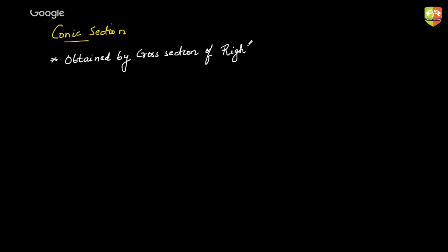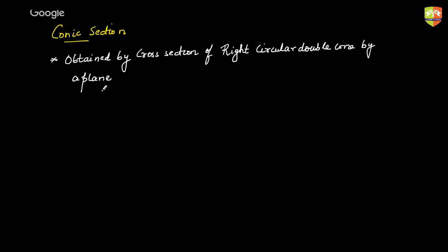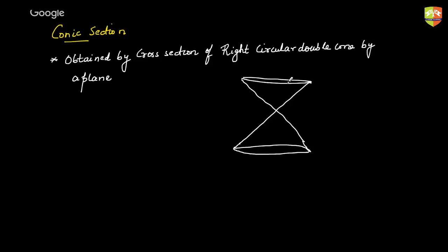Conic sections are obtained by the cross-section of a right circular double cone by a plane. Depending upon how this plane passes through the right circular double cone, different conic sections are generated. A right circular double cone is a structure where this line is called the axis of the cone.